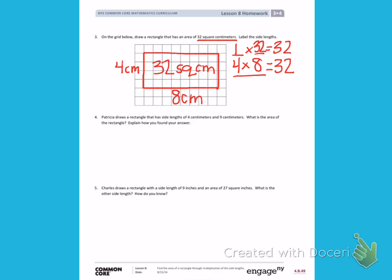Number 4: Patricia draws a rectangle that has side lengths of 4 centimeters and 9 centimeters. What is the area of the rectangle? Explain how you found your answer. My rectangle has to have lengths of 4 centimeters and 9 centimeters, so I'm going to start by drawing a rectangle. I will label the longer side as 9 centimeters and the shorter side as 4 centimeters.